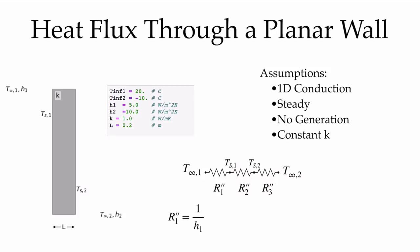Putting in those resistances, our area-specific convection resistance is 1/H1, which we'll use to solve the heat flux. If we wanted to solve the heat rate in watts, that would have been 1/(H·A). We don't have the area given in this problem, and so we will solve for the heat flux in W/m².